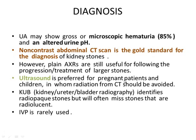Ultrasound is preferred for pregnant patients and children, where radiation from CT should be avoided. Kidney ureter bladder (KUB) radiography identifies radio-opaque stones but will often miss stones that are radiolucent. Remember: 'U' is for uric acid, and uric acid stones are radiolucent. IVP pyelogram is rarely used.